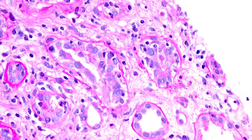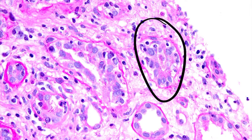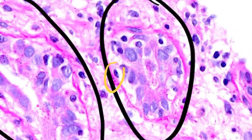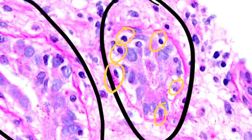As we move into the next image, we can see these tubules at a higher power, all of which show tubulitis. And if we count, here we have one, two, three, four, five, six lymphocytes within the tubule, consistent with moderate tubulitis or a T2.